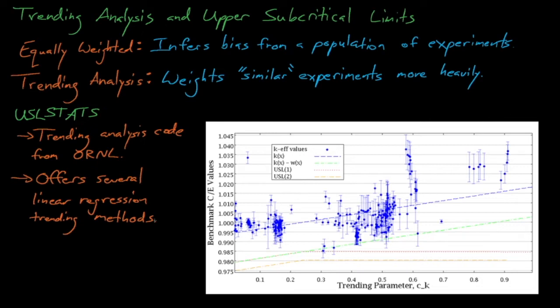After we develop this trend, we can either interpolate or extrapolate the trend to estimate what the likely C over E values should be for a benchmark application. This analysis also allows us to know the bias for our application, and the 95-95 confidence interval for the bias.